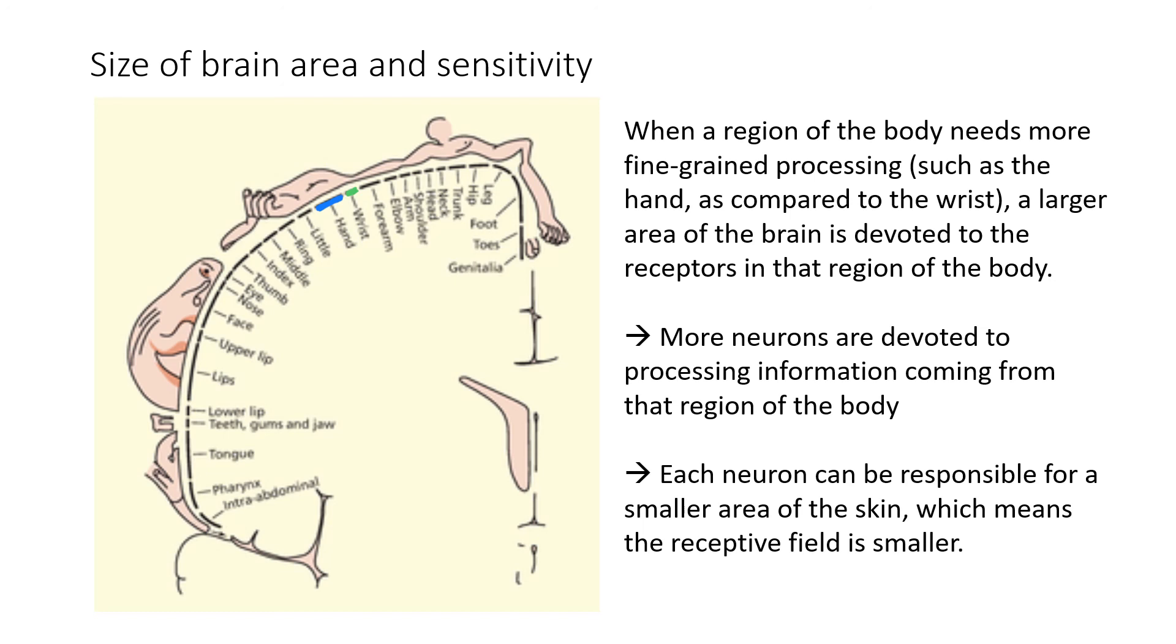In the somatosensory area of the cortex, we see that all the body parts are represented in this map. We can see that the hand region, which is where the blue line is right here, is larger than the line for the wrist, which means that there are more neurons devoted to the sensory information coming from the hand than there are from the wrist.